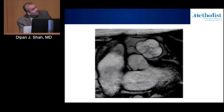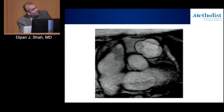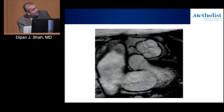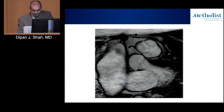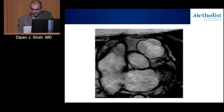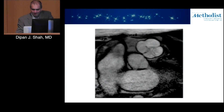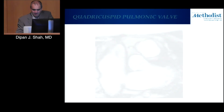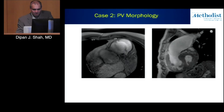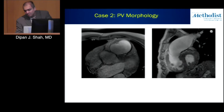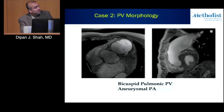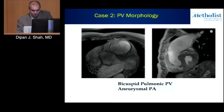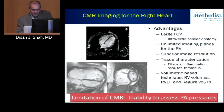CMR also provides excellent views of valve anatomy itself. Here's an example of a pulmonic valve that is quadricuspid, as can be appreciated on imaging. Another example shows a bicuspid pulmonic valve with a dilated pulmonary artery distal to it from the flow disturbance.